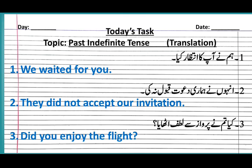For example in negative: 'They did not accept our invitation.' In questions, we use 'did' at the beginning: did + subject + first form of verb + object + question mark. For example: 'Did you enjoy the flight?' We have written these three sentence types — simple, negative, and interrogative — from past indefinite tense in our notebooks.